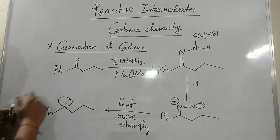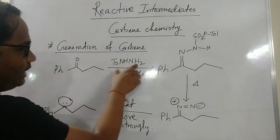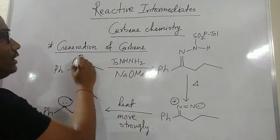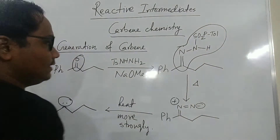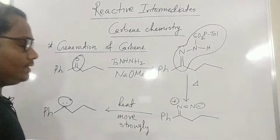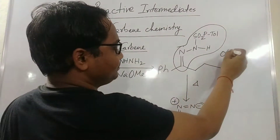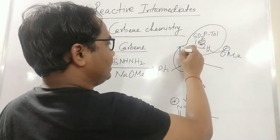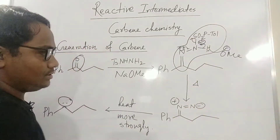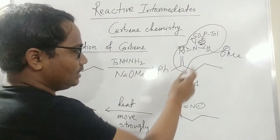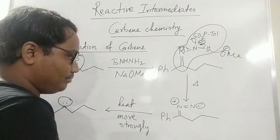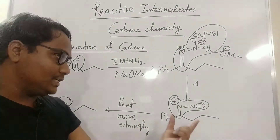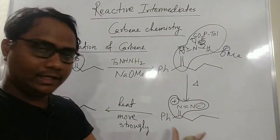For the generation of carbene, I take this ketone and use tosylhydrazine and methoxide. That will form a tosylhydrazone intermediate. Then the base will take a proton, a negative charge develops, and a diazo compound is formed. When this diazo compound is heated, it will give the carbene intermediate.